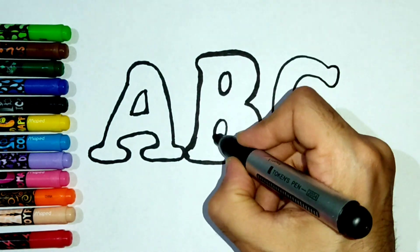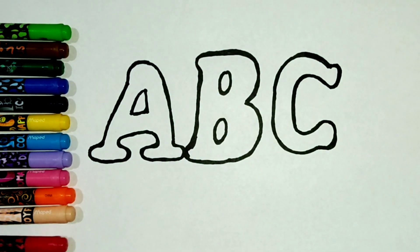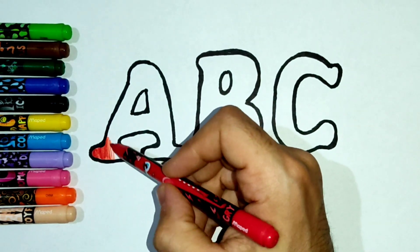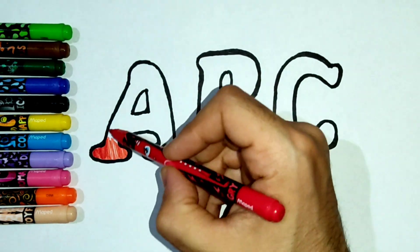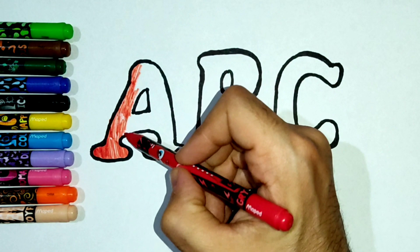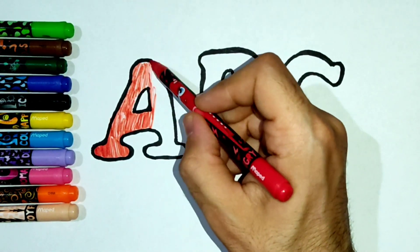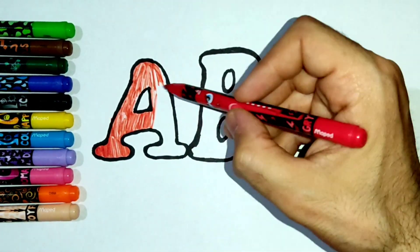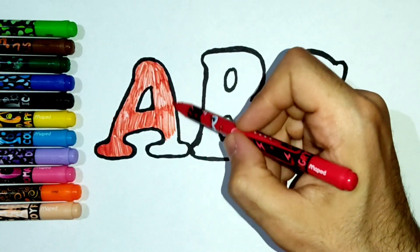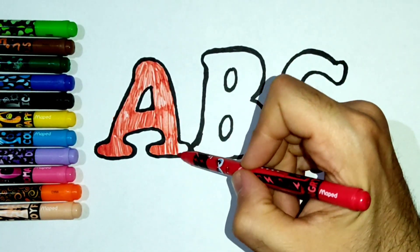A, B, C, D, E, F, G, H, I, J, K, L, M, N, O, P, Q, R, S, T, U, V, W, X, Y, and Z. Now I know my ABCs, next time won't you sing with me?